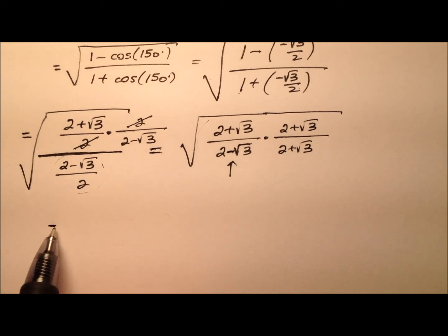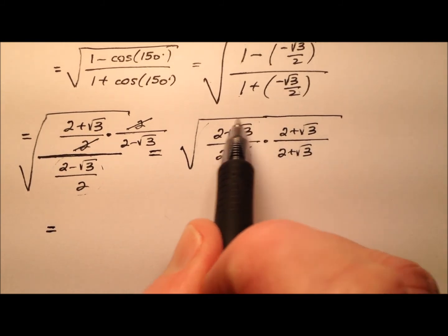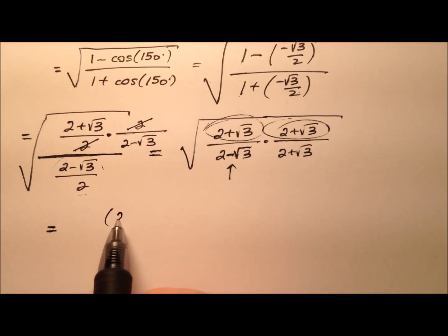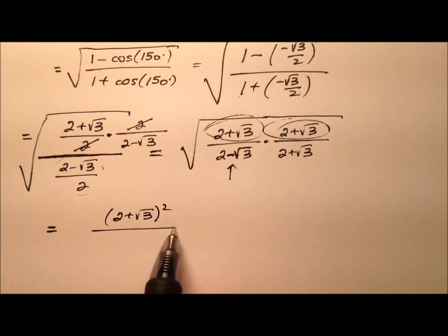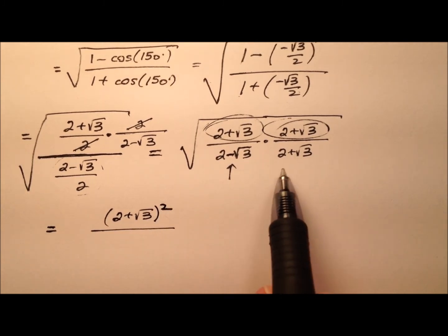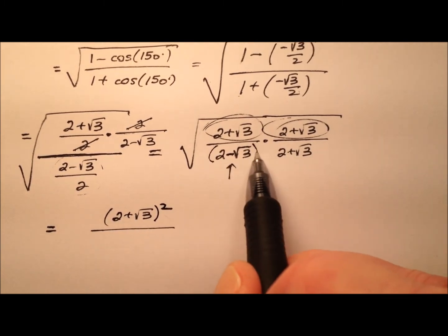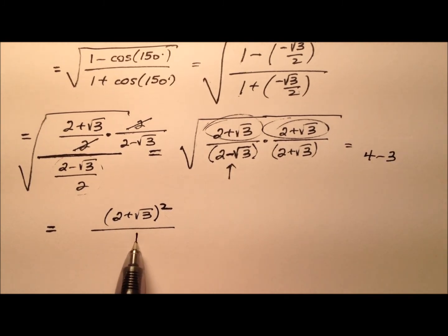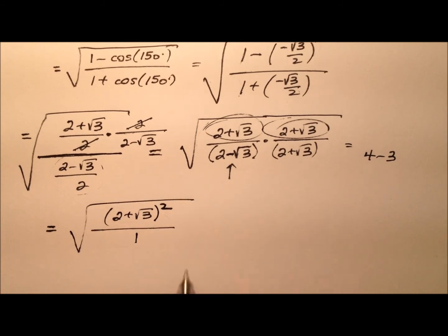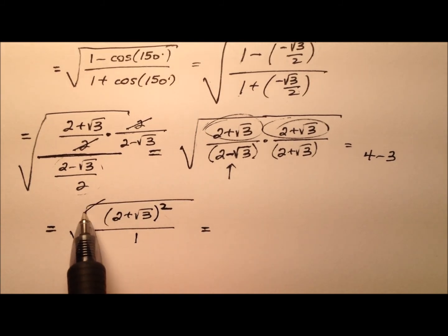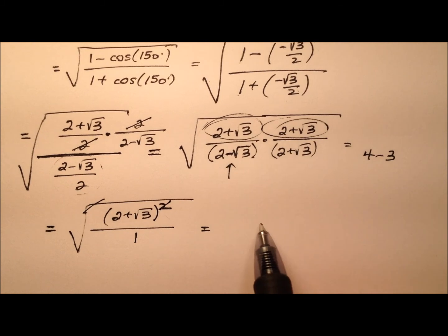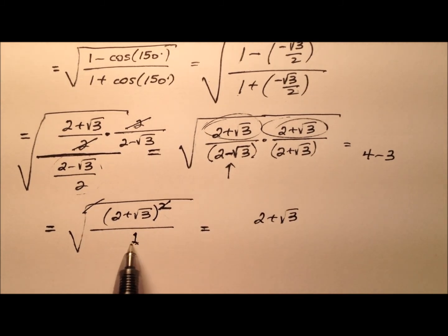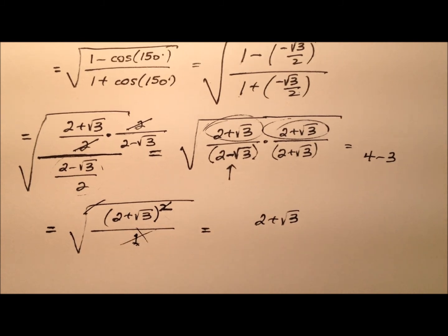When we do that, the numerator becomes 2 plus radical 3 times 2 plus radical 3 — a perfect square. In the denominator, we get 4 minus 3, which is 1. So the square root and the square cancel out, leaving 2 plus radical 3. The whole thing is over 1, and the square root of 1 is 1, so we can ignore that.